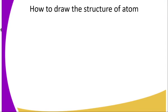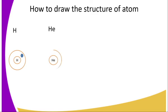For hydrogen, we start with the nucleus and write the symbol H. The first energy level has one electron — electrons are found within the energy levels. That is the structure of the hydrogen atom. For helium, we start with the nucleus, symbol He. Helium has atomic number 2, meaning two protons and therefore two electrons in the first energy level. That is the structure of helium.